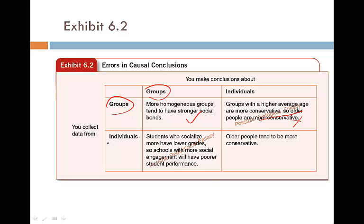Similarly, if we have individual data and apply it to groups — for example, students who socialize more have lower grades, therefore schools with more social engagement will have poor student performance — that is called the reductionist fallacy. But if we use individual data for individuals, such as older people tend to be more conservative, we are doing it correctly. We need to be aware of what situation calls for what type of data.